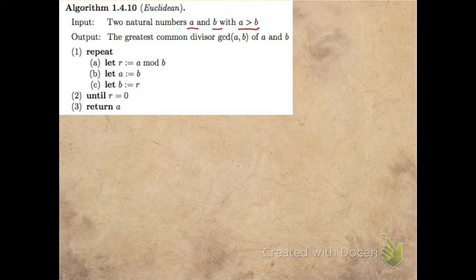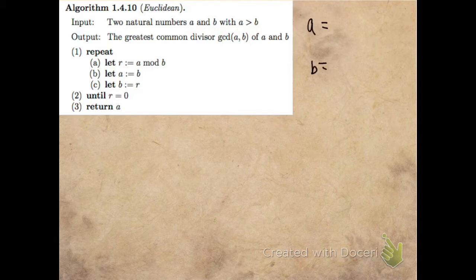Let's go through the algorithm in the context of an example. It takes as input two natural numbers A and B, and it's going to output the greatest common divisor of A and B.